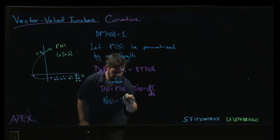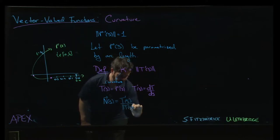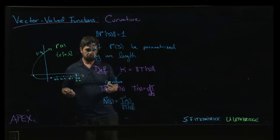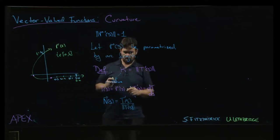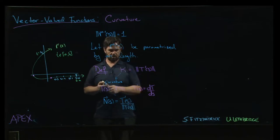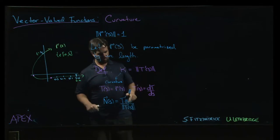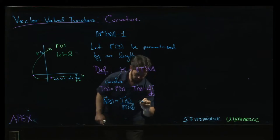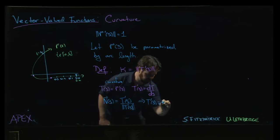But now we just defined that magnitude of T prime to be this curvature. So one way you can rewrite this is to say T prime of s is the curvature times the unit normal.